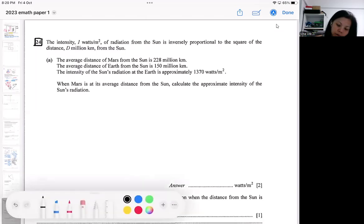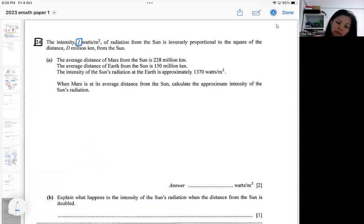So in this question, I stands for the intensity of the radiation from the sun and is inversely related to the distance from the sun. So d is the distance in kilometers, how many million kilometers from the sun.